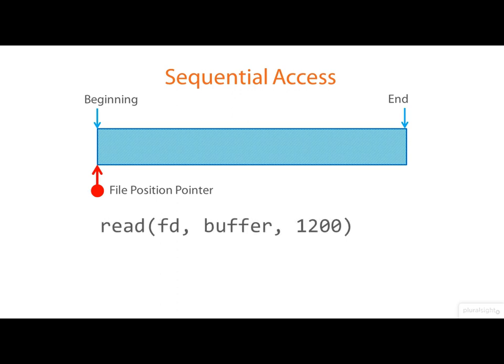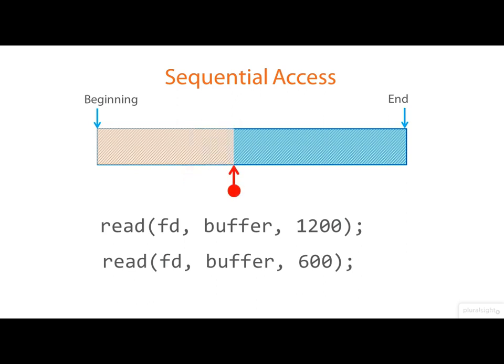If I now read from the file, the file position pointer advances. If I read some more, it advances further. So this is the normal sequential access.